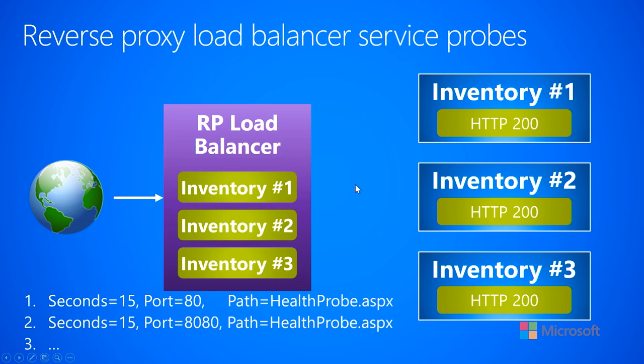Now let's say that machine one heals itself, and so the next time the load balancer sends a probe 15 seconds later, it now returns a 200. Then the load balancer sets this back to green, indicating that any new requests that come in from the internet can once again be sent to any of the three machines on the right-hand side.